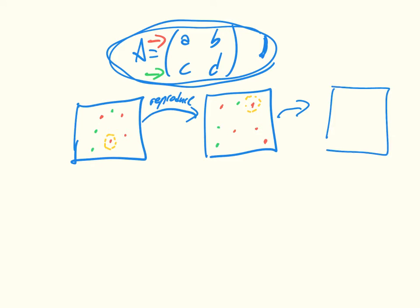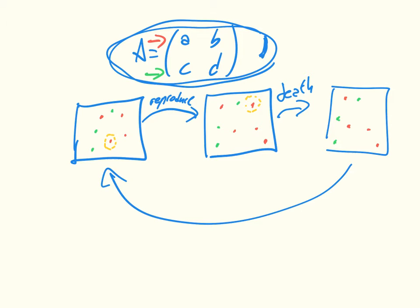We'd end up back at essentially the same situation as before, with seven individuals, four of the first type. That's the general idea behind a Moran process on a game — you repeat this again and again. At some point you'll have nothing but individuals of the first type, or nothing but individuals of the second type.